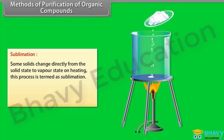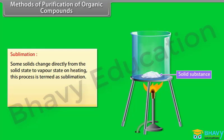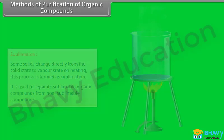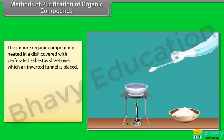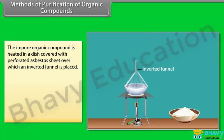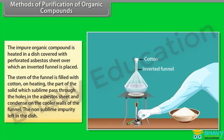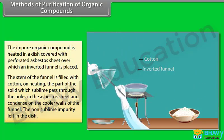Sublimation: Some solids change directly from the solid state to vapour state on heating. This process is termed as sublimation. It is used to separate sublimable organic compounds from non-sublimable compounds. The impure organic compound is heated in a dish covered with a perforated asbestos sheet, over which an inverted funnel is placed. The stem of the funnel is filled with cotton. On heating, the part of the solid that sublimes passes through the holes in the asbestos sheet and condenses on the cooler walls of the funnel, while the non-sublimable impurity remains.